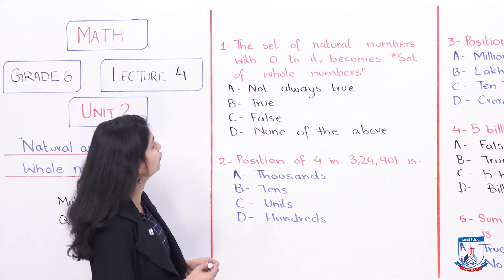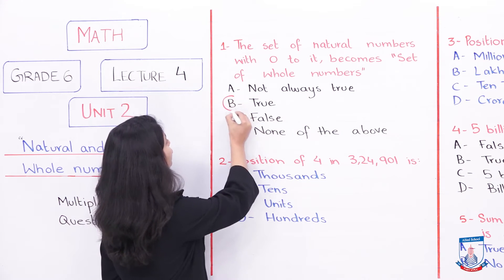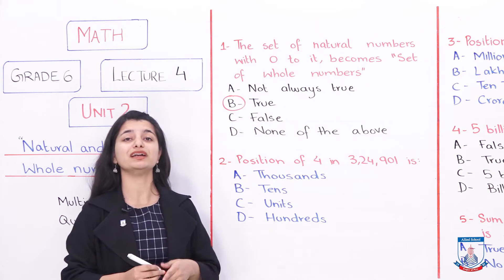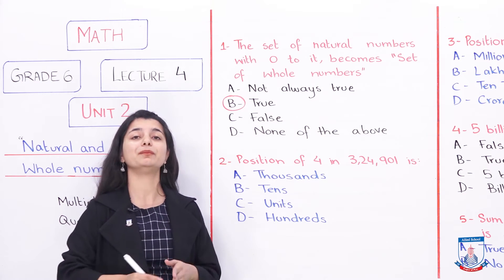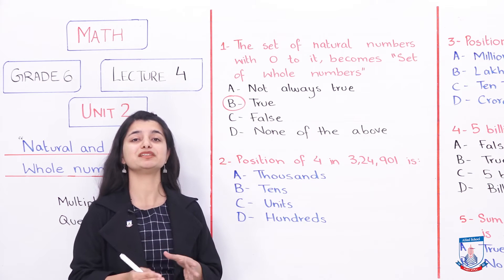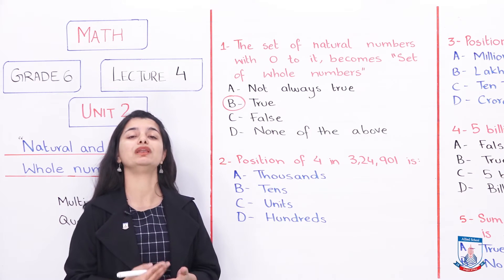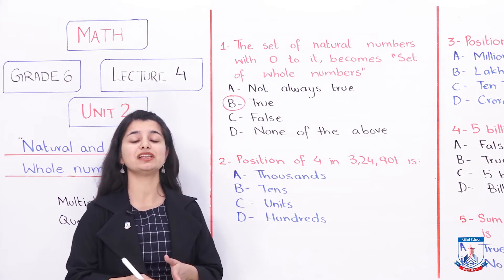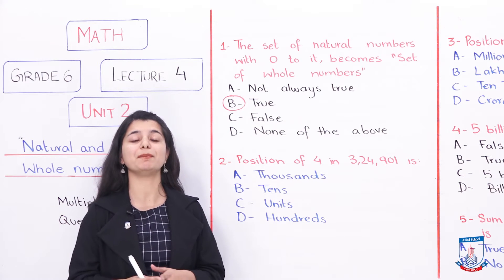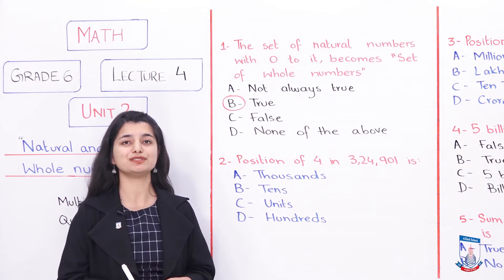That is true. For me, it is completely true. Why? Because when you see natural numbers, they start from 1. But the definition of whole numbers is that if you add 0 to natural numbers, then it becomes whole numbers. The set of natural numbers then becomes the set of whole numbers. So, the answer is true, option B.